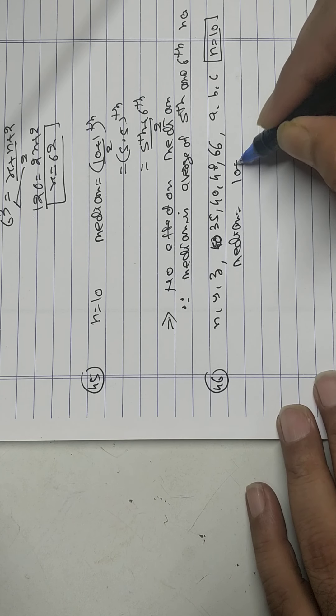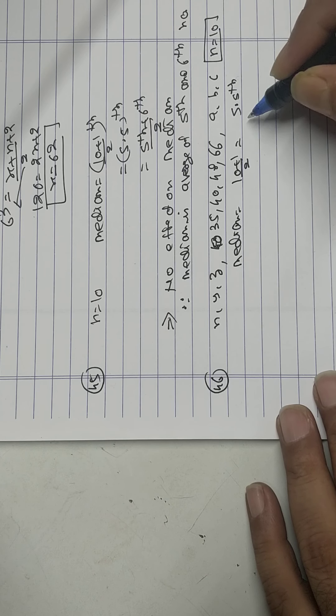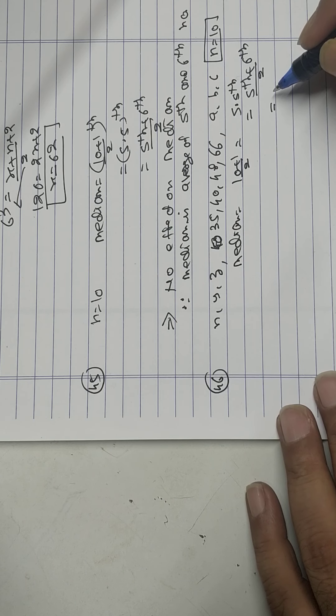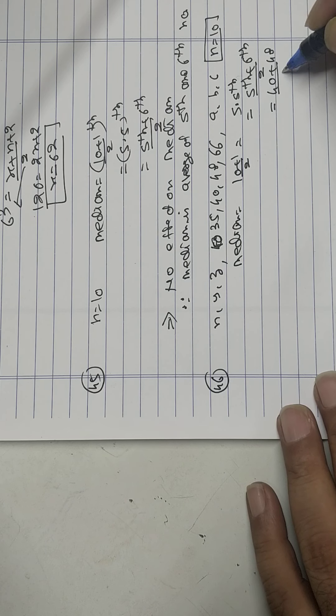So median is 10 plus 1 upon 2, that is 5.5th term, average of 5th and 6th divided by 2. 5th is 40, 6th is 48 divided by 2. My answer is 44.